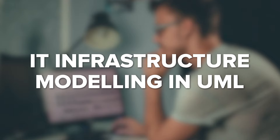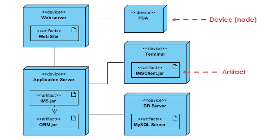IT Infrastructure Modeling in UML: There are limited possibilities to model infrastructure in UML. The closest diagram that brings us some look at infrastructure is the Deployment Diagram. This diagram enables us to model the execution environment for software components. There's no diagram dedicated to pure hardware infrastructure and network environment, though.